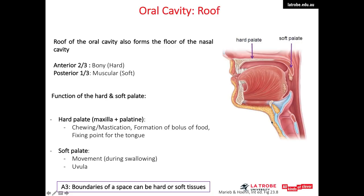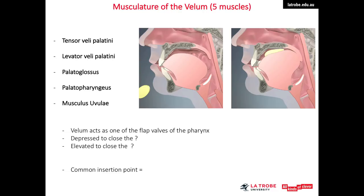The soft palate, also known as the velum, is made of five muscles: tensor veli palatini, levator veli palatini, palatoglossus, palatopharyngeus, and musculus uvulae. The velum is one of the flap valves of the pharynx. When we open our mouth, the dangling part is called the muscular uvulae or uvula, and it is part of the five muscles that make the soft palate.